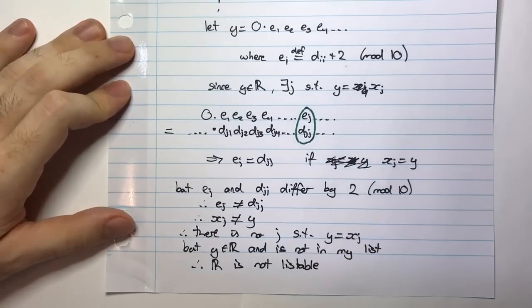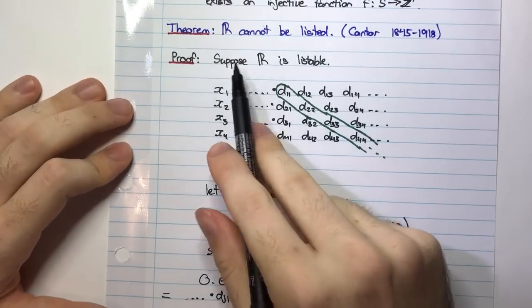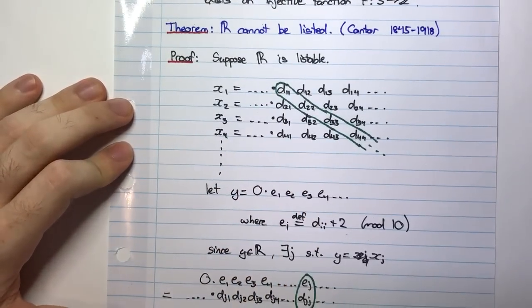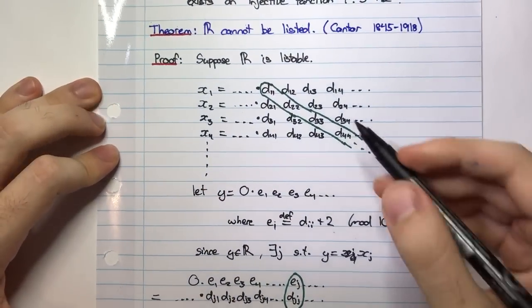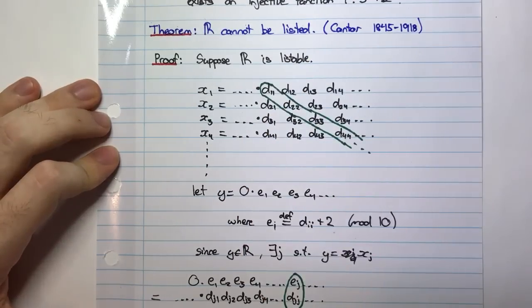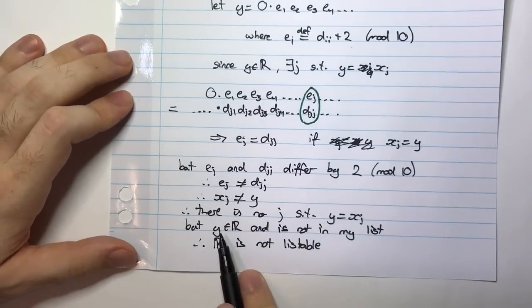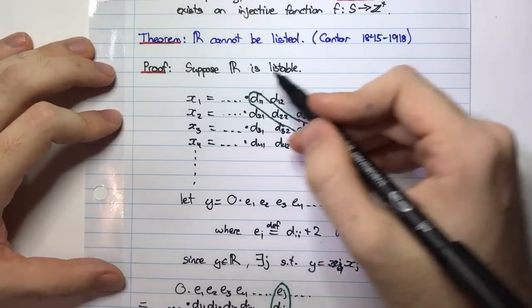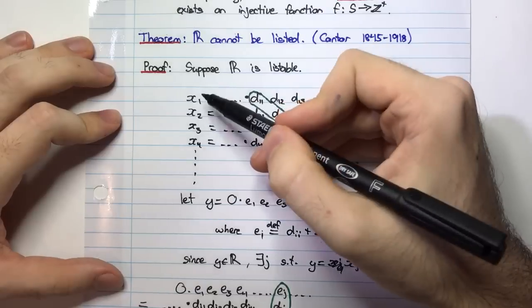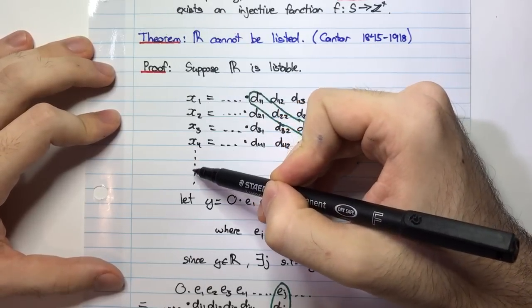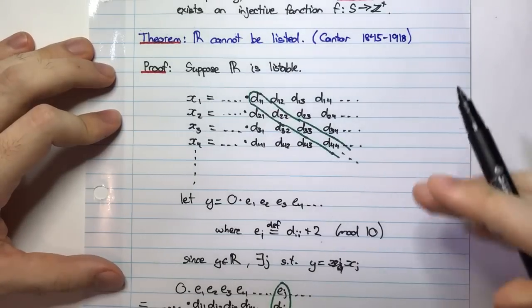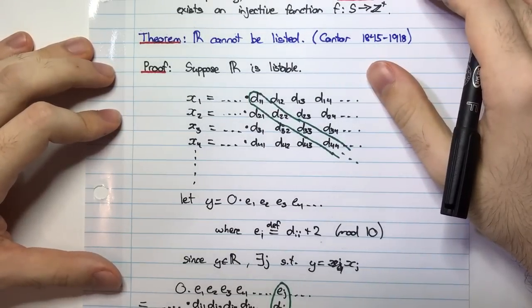Because I have a contradiction. My contradiction is that I suppose that R is listable. If R is listable, that means every single real number can be placed in this list here. But I've just shown that there is such a real number, namely Y, that isn't in this list up here. There was no J which corresponded to Y here. So therefore, R is not listable.